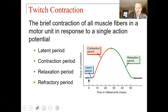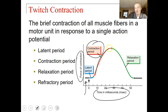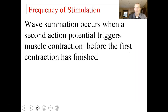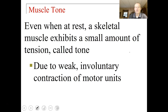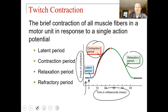Force of contraction is on the y-axis and time in milliseconds on the x-axis. As you get the first signal, there is a latent period, then a contraction period where the muscle cells are fully contracted, then a relaxation period. So there's a graphical display of a muscle twitch as you get more and more signaling from action potentials. Wave summation occurs when a second action potential triggers muscle contraction before the first has finished, producing stronger and stronger contractions.